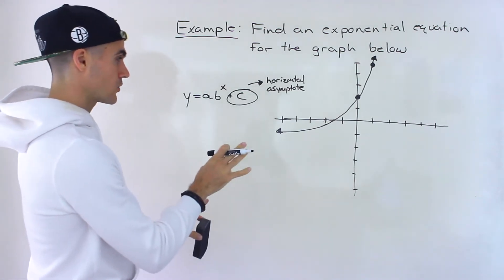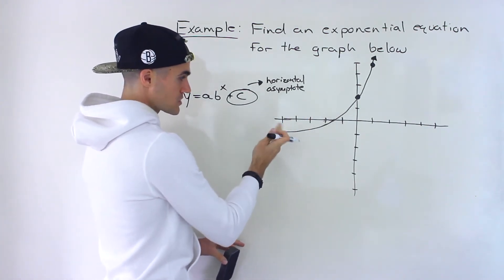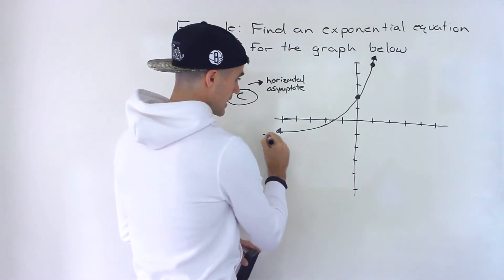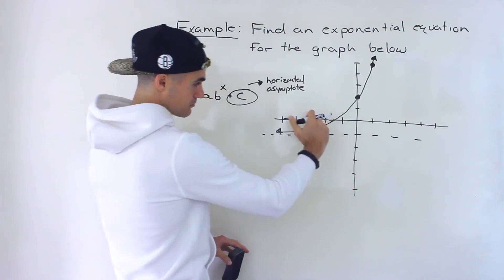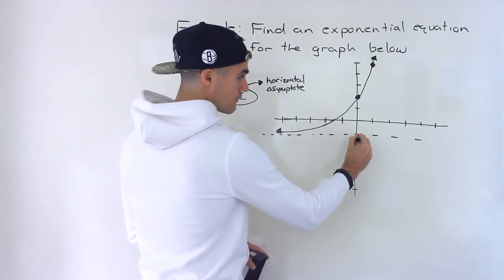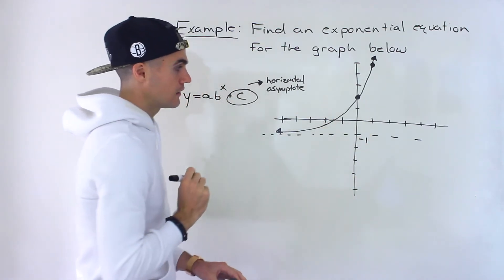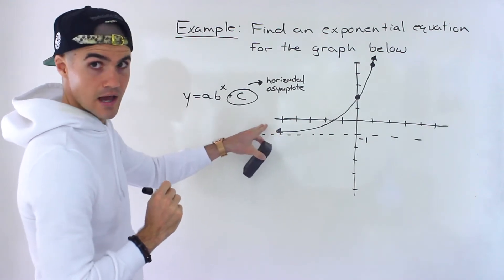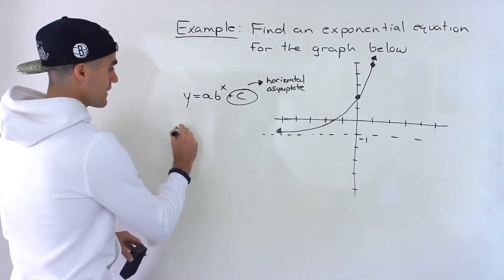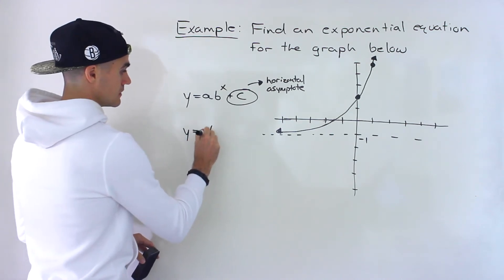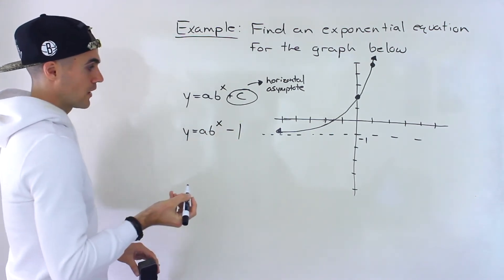So sometimes you got to look at the graph and see what value it's approaching, and notice that in this case we can be confident that it's approaching that y value of negative 1 from this side over here. So we know the c value in this case is going to be negative 1.